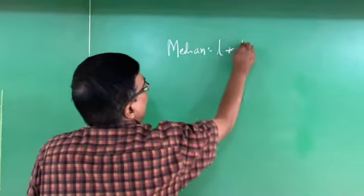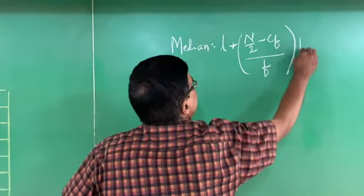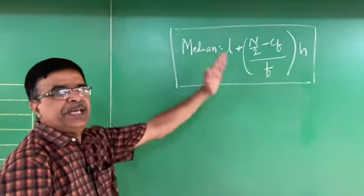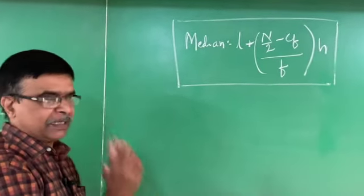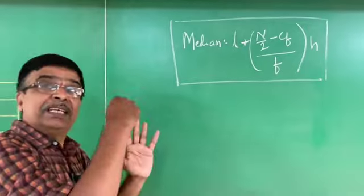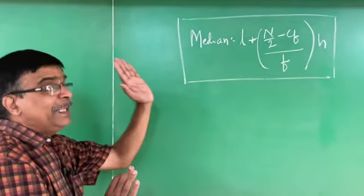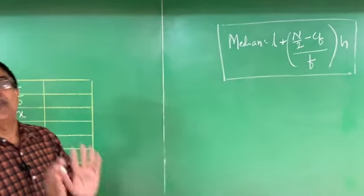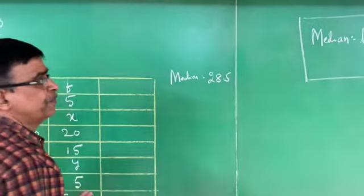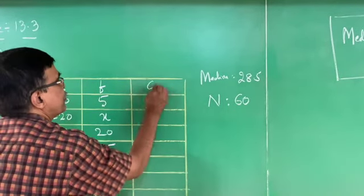The median formula for grouped data is: Median = L + [(N/2 − CF) / F] × H. Here, L is the lower limit of the median class, N is the total frequency, CF is the cumulative frequency of the class preceding the median class, F is the frequency of the median class, and H is the size of the class interval. Median is given as 28.5 and N = 60.